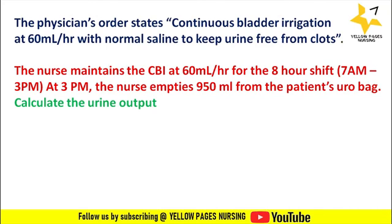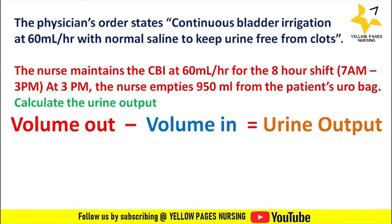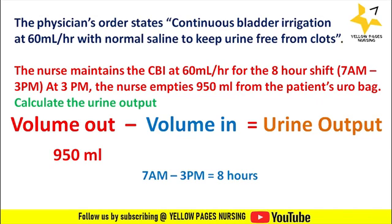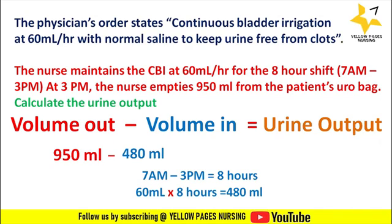The formula is volume out minus volume in equals urine output. The volume from the urine bag was 950 ml. The amount given for continuous bladder irrigation was 60 ml per hour, and the nurse's shift was 8 hours, so 60 multiplied by 8 equals 480 ml. Therefore, 950 minus 480 gives 470 ml, and the urine output will be 470 ml.